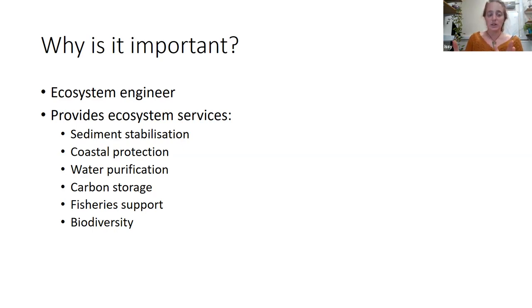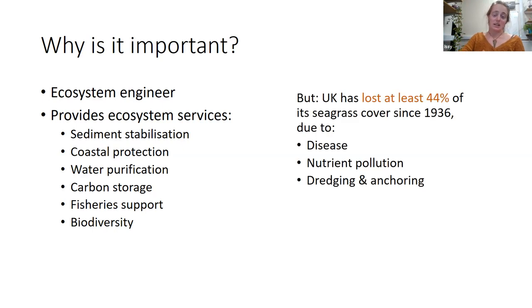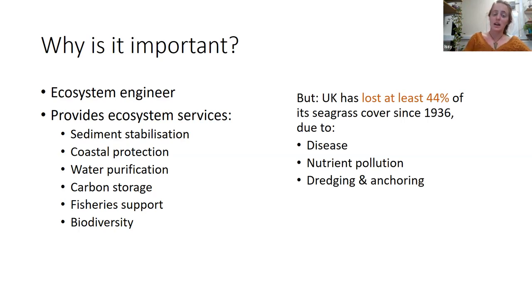Sometimes seagrass can actually be more important for fishing than coral reefs. Seagrass is also super important for biodiversity — it's a unique ecosystem supporting a unique suite of species. However, the UK has lost at least 44% of its seagrass cover since 1936, when there was a big die-off due to seagrass wasting disease made worse by nutrient pollution. We could have lost over 90% looking further back in time, due to causes including dredging and anchoring.